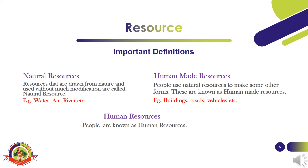Next, what are human-made resources? This is the second type of resource. People use natural resources to make some other forms — these are known as human-made resources. Examples include buildings, roads, vehicles, machinery, etc. Technology is also a human-made resource.